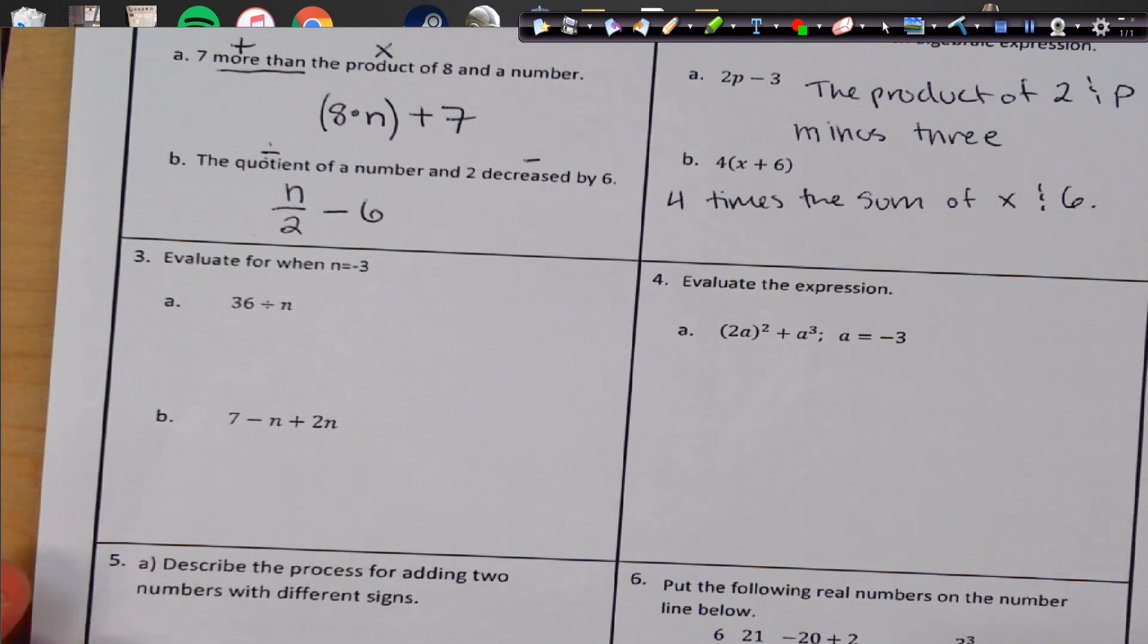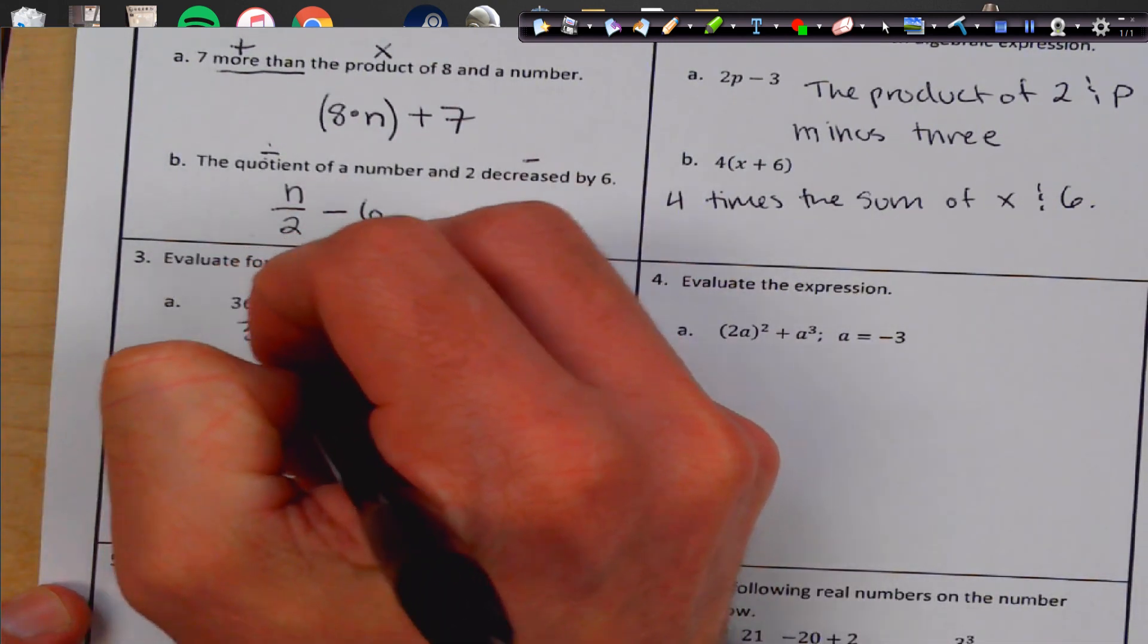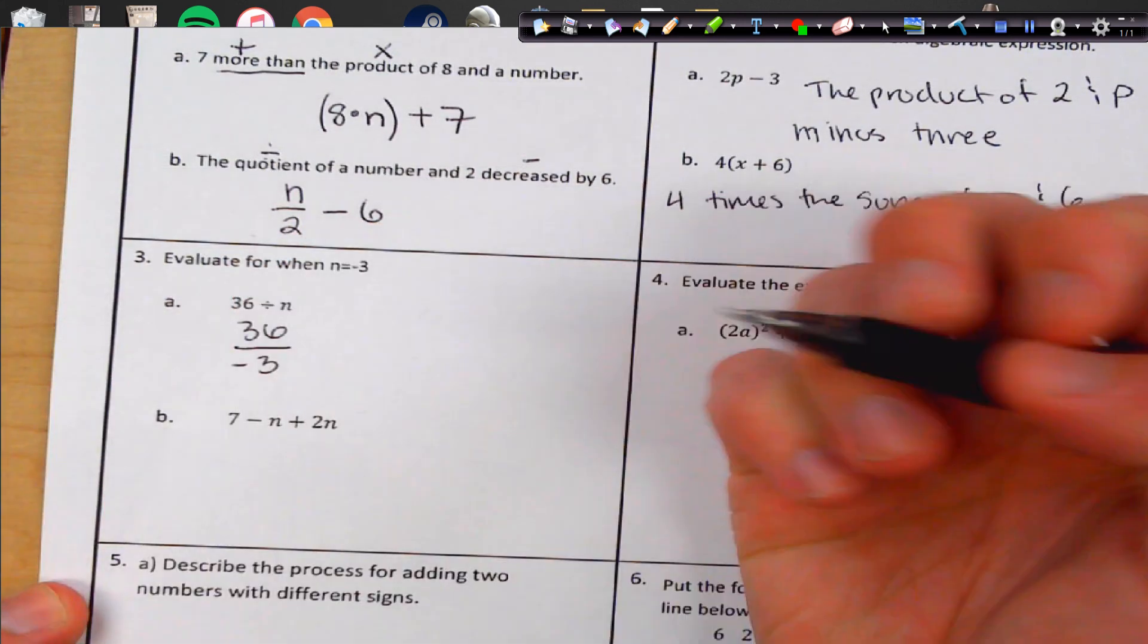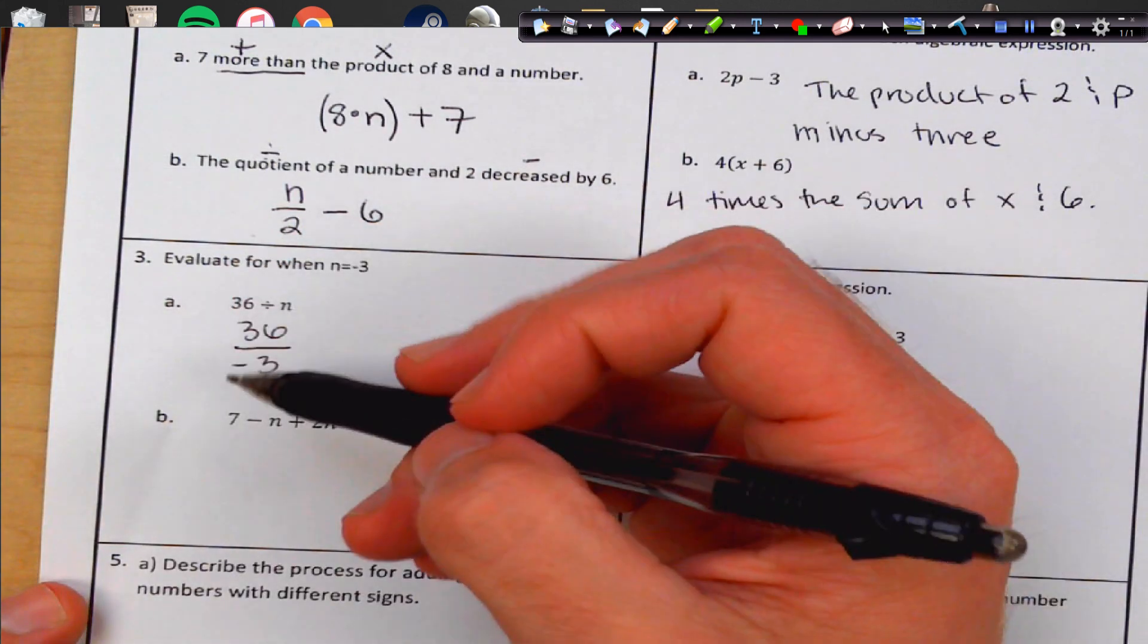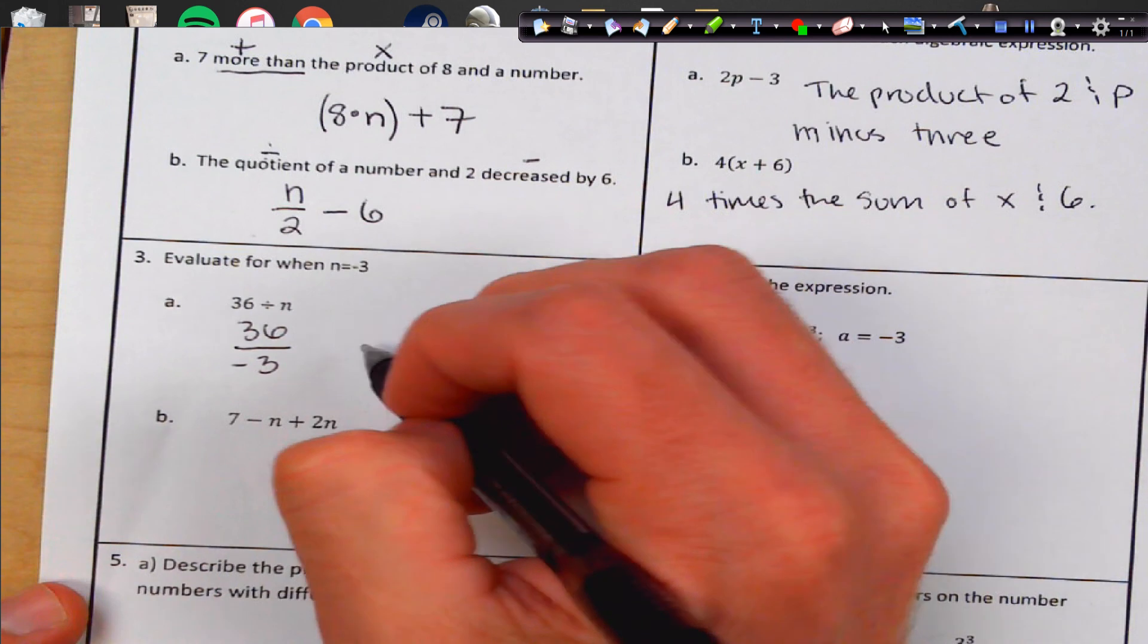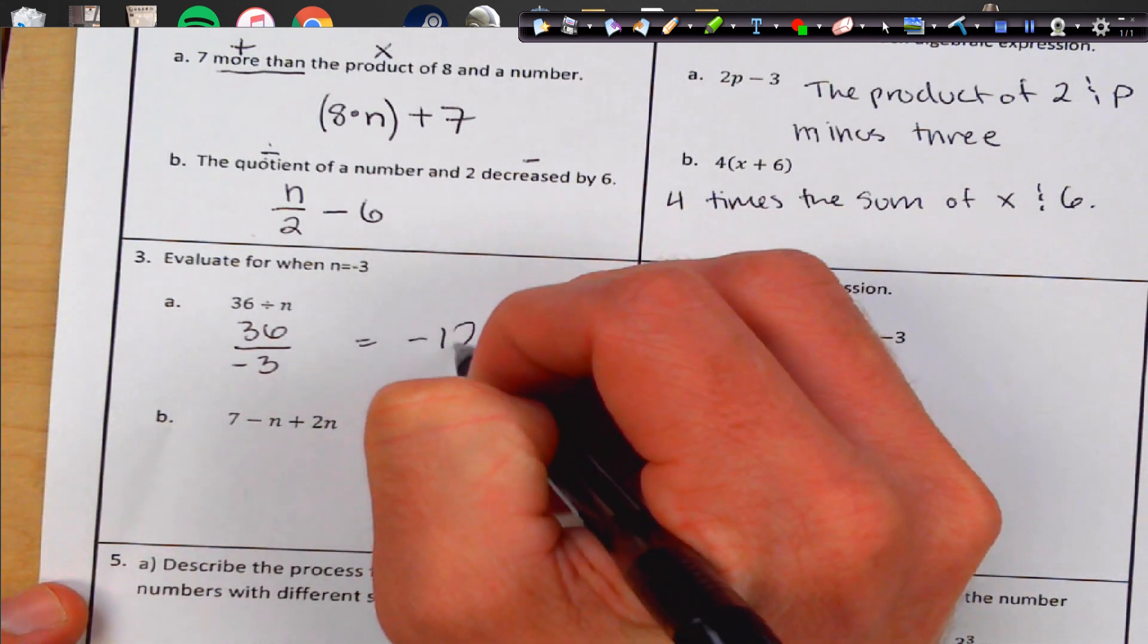Alright, here we're going to plug in. So 36 divided by negative 3. So 3 goes into 36 twelve times. We have a positive and a negative, so it's going to be a negative 12.